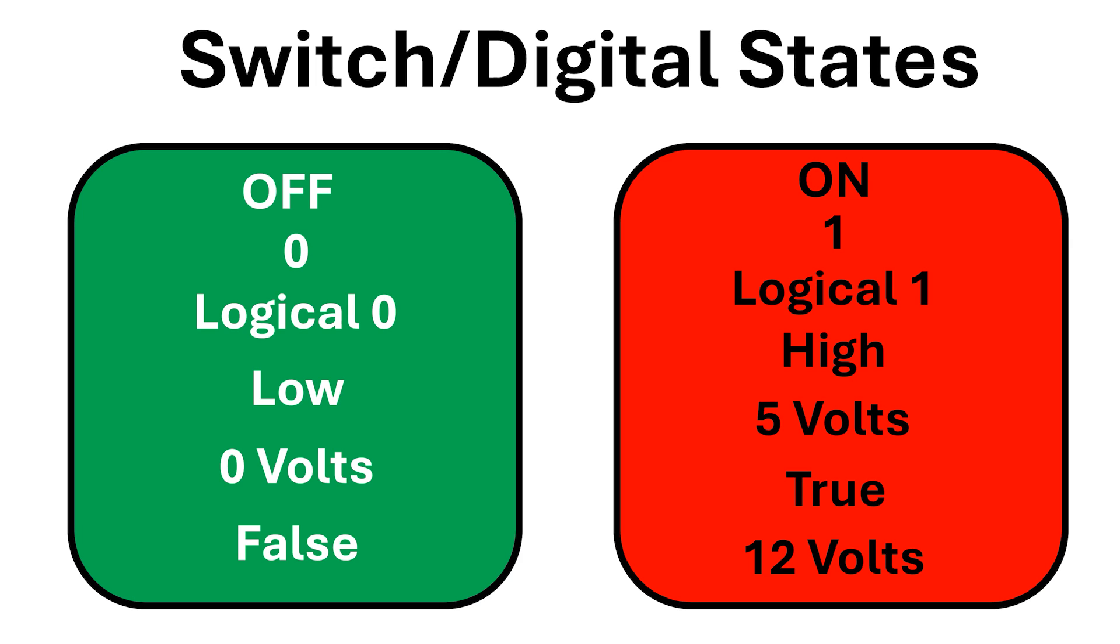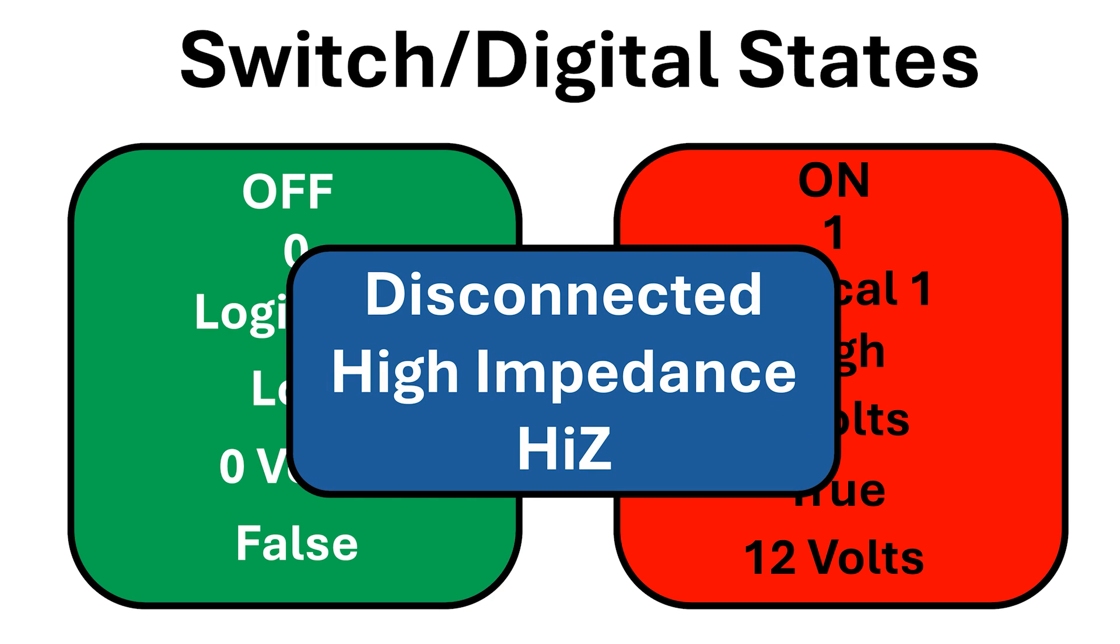Remember this slide, where things easily fit into one of two categories for logical 0 and logical 1? Well, there is a fly in the ointment, and that fly is the disconnected state. Disconnected doesn't really fit that well into this dichotomy.